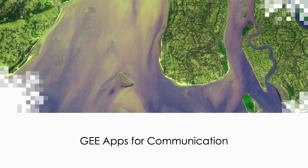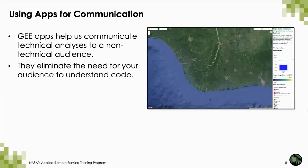Last time we went over how to use a random forest classification to construct a mangrove map in Earth Engine using satellite imagery. Today we're going to focus on how we actually communicate results from an analysis like that. There are ways to share your code with other Earth Engine users, however many users do not have a coding background, so we want to make sure our data is equally accessible to all parties. Earth Engine apps help us communicate technical analyses to a non-technical audience by removing the need to interact with the code editor — there's no longer any need for your audience to understand JavaScript or how Earth Engine works.